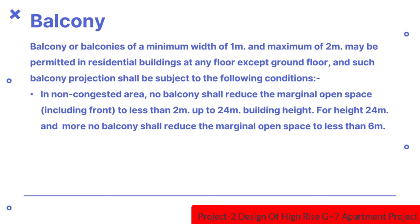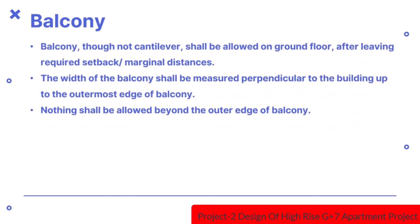Balcony or balconies of a minimum width of 1m and maximum of 2m may be permitted in residential buildings at any floor except ground floor. In non-congested areas, no balcony shall reduce the marginal open space to less than 2m up to 24m building height. For height 24m and more, no balcony shall reduce the marginal open space to less than 6m. A balcony, though not cantilevered, shall be allowed on the ground floor after leaving the required setback or marginal distances.